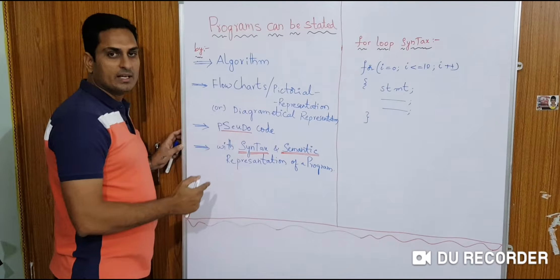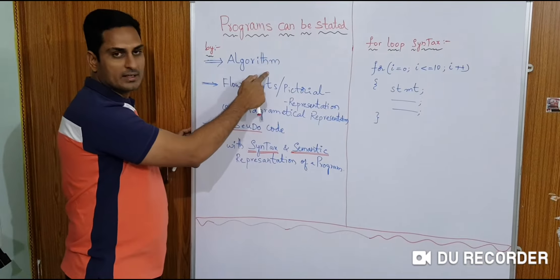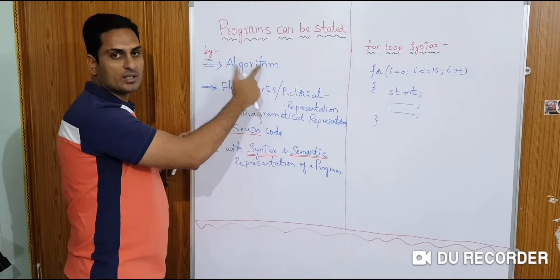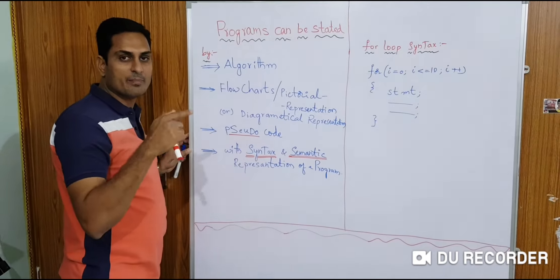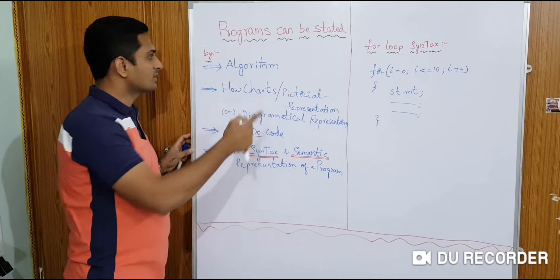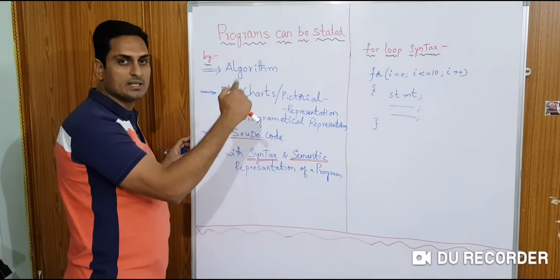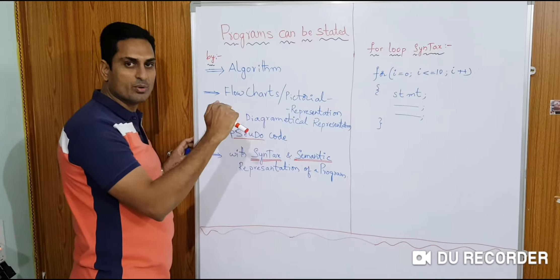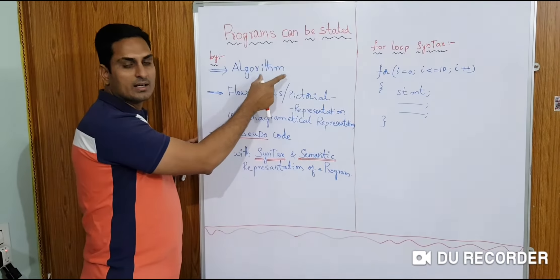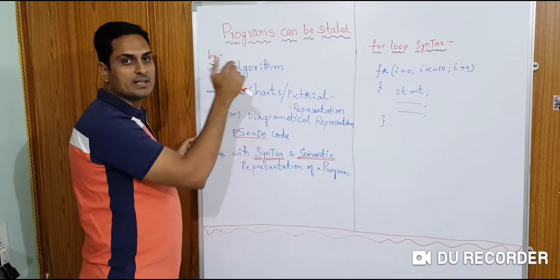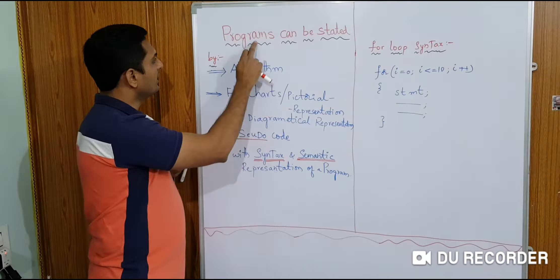First, algorithm. A program can be expressed by algorithms. What are algorithms? Algorithms are an English step-by-step representation of a program. C++, Java — any program can be expressed by algorithm. Algorithm means a step-by-step English representation of a program.